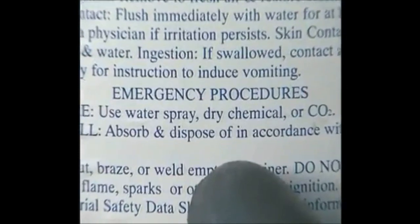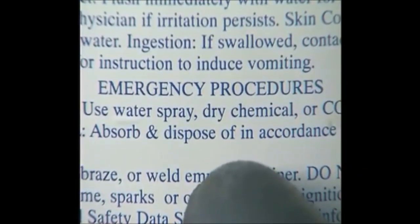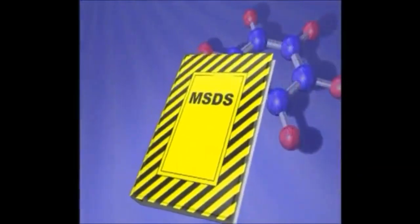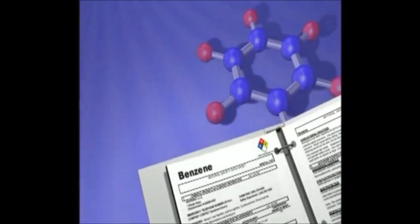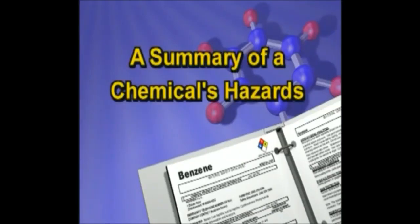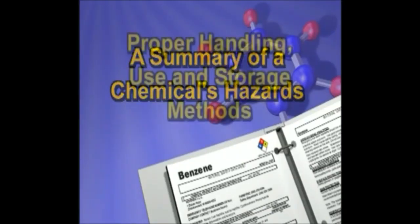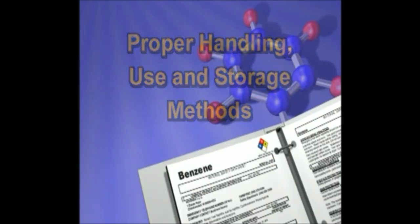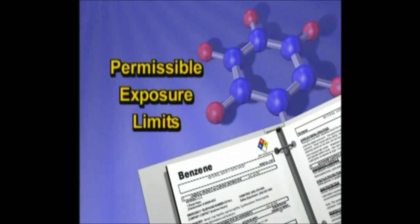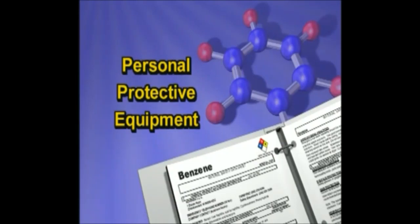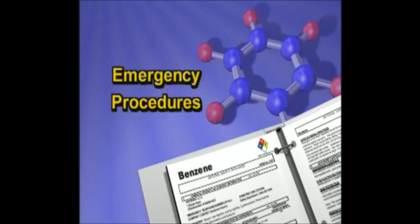When handling chemicals, knowledge is your most powerful tool. Begin by recognizing the specific hazard or hazards the chemical may present. The Material Safety Data Sheet, or MSDS, is one of your best sources for information on the chemicals you use. It contains a summary of a chemical's hazards, as well as proper handling, use, and storage methods. The MSDS also lists important information for protecting you, such as permissible exposure limits, the right personal protective equipment, firefighting techniques, and emergency procedures.